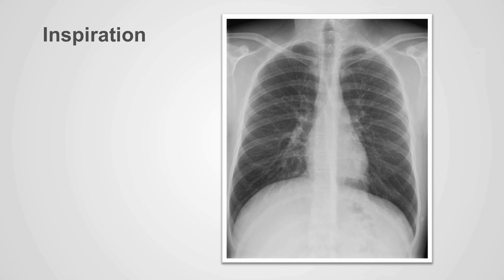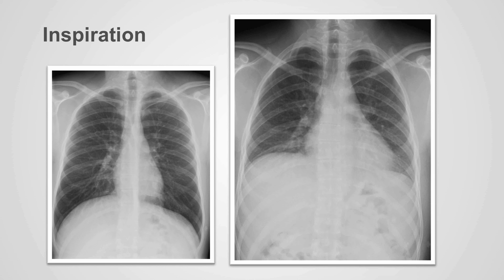The quality of the inspiration is difficult to assess without spirometry. However, assuming that the patient has taken a good inspiration, the outline of the ninth posterior rib should be seen above the right hemidiaphragm. In this case here, we can see to the tenth rib. How we number the ribs will be discussed in future presentations. These two x-rays taken on the same patient at the same time highlight the difference between inspiration and expiration.